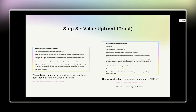Step three: value upfront — that's the 'trust' pillar. The upfront value in that first email is a strategic video showing them how they can rank on Google's first page. About 90% of prospects want that if they're not already on the first page. Most responses are either 'already working with someone' or 'interested but not now,' so I circle back with a lot of clients. As you can see, I'm not even selling web design here — this is mass outreach cold email sequences, which is why there's no name or first compliment. It's all about volume.